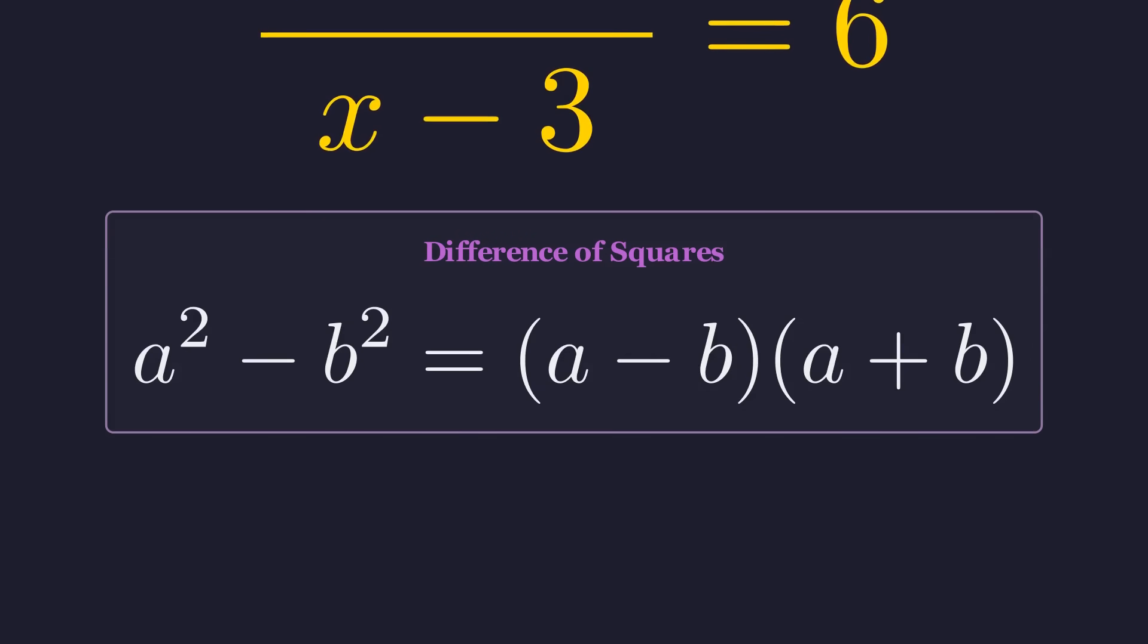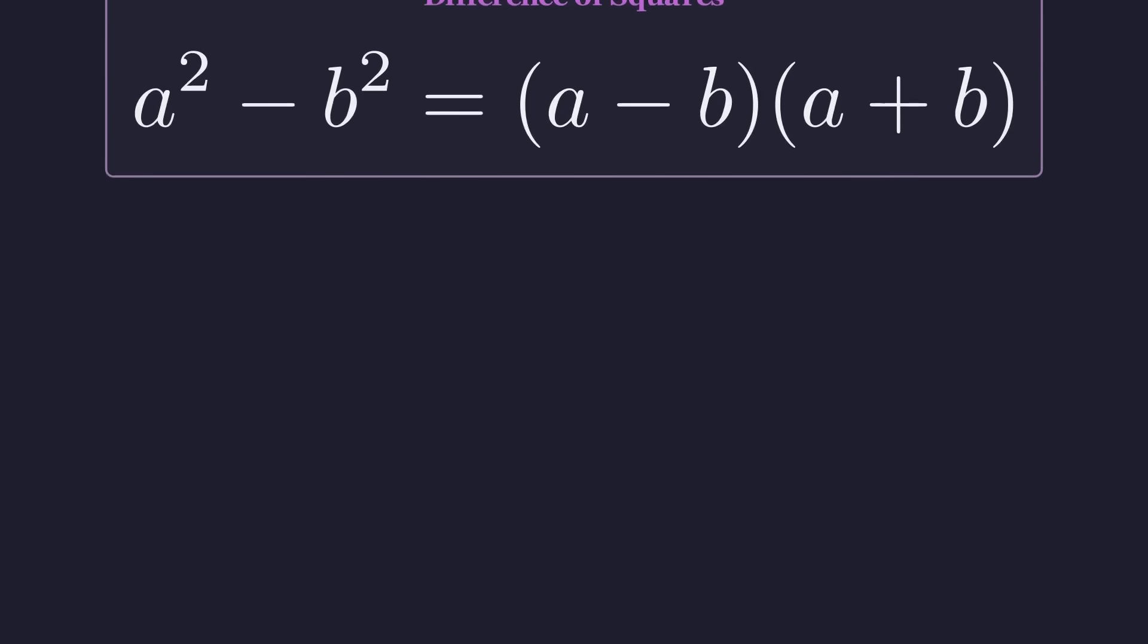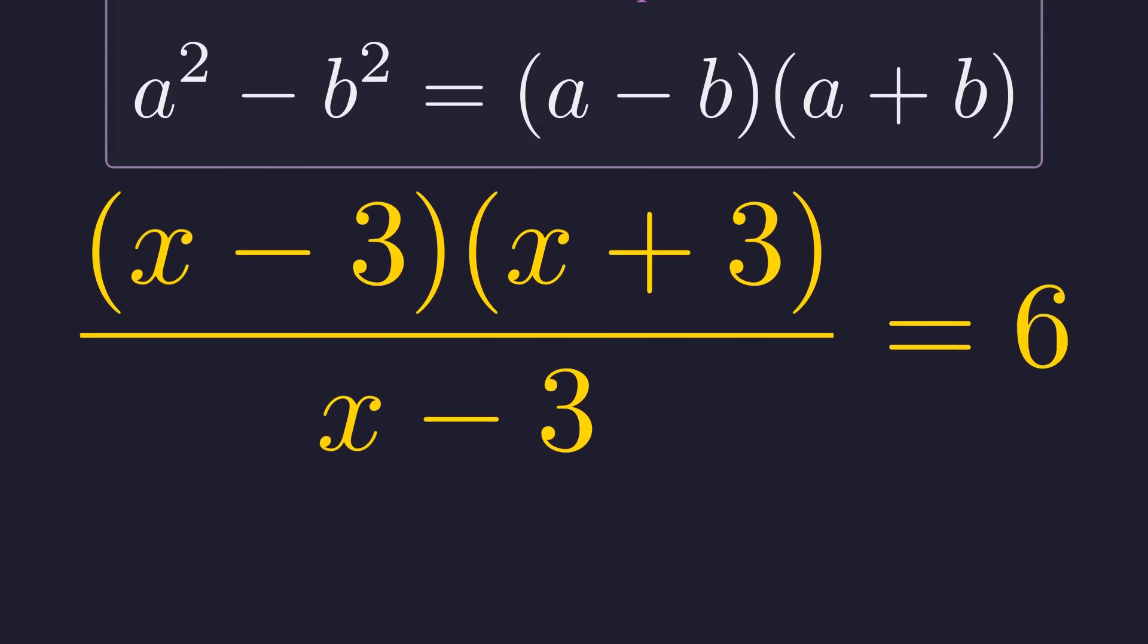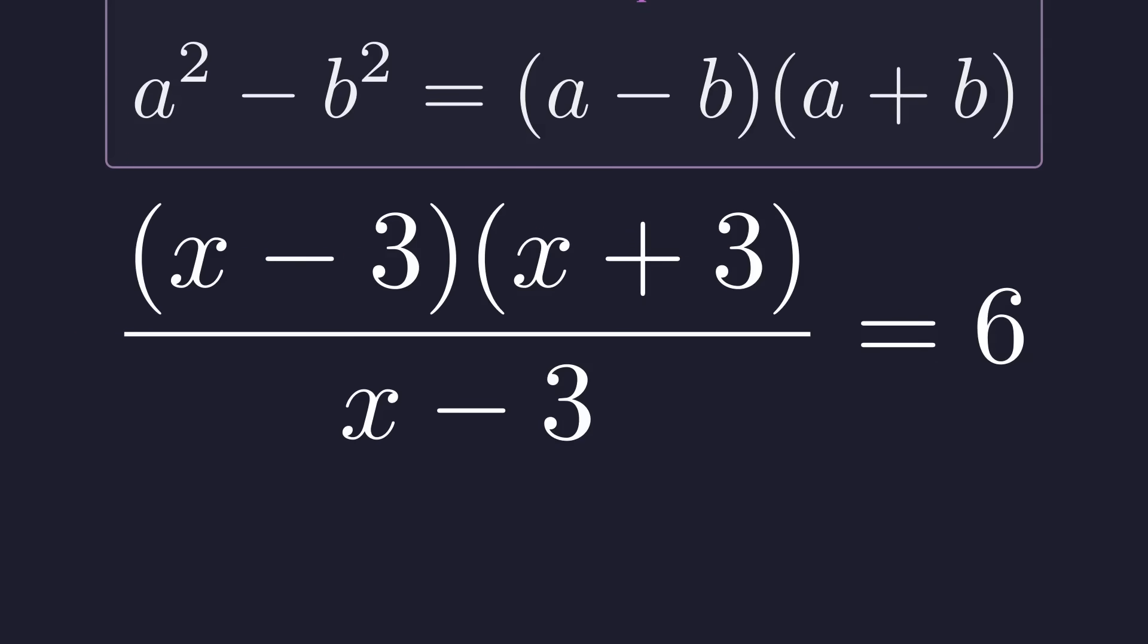So applying that pattern here, the numerator becomes (x - 3)(x + 3). Now notice what happened. x - 3 appears both in the numerator and in the denominator, so we can cancel these out.